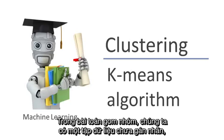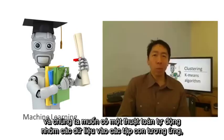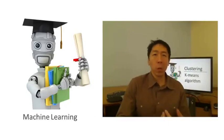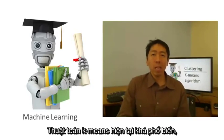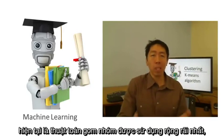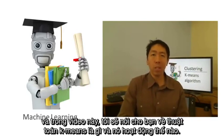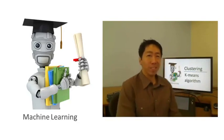In the clustering problem, we are given an unlabeled data set and we would like to have an algorithm automatically group the data into coherent subsets or into coherent clusters for us. The k-means algorithm is by far the most popular and most widely used clustering algorithm, and in this video I'd like to tell you what the k-means algorithm is and how it works.